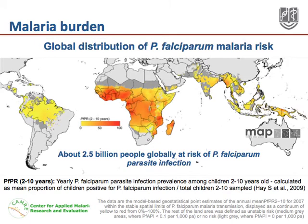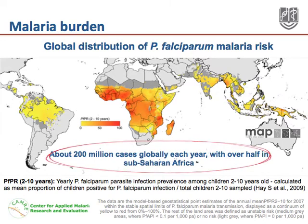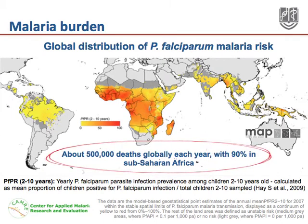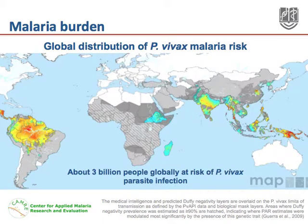Globally, about 2.5 billion people are at risk of Plasmodium falciparum parasite infection. Globally, about 200 million cases of Plasmodium falciparum occur each year, with over half in Sub-Saharan Africa. Globally, Plasmodium falciparum is responsible for 500,000 deaths each year, with over 90% in Sub-Saharan Africa and most occurring in children under the age of 5. Globally, about 3 billion people are at risk of Plasmodium vivax parasite infection.